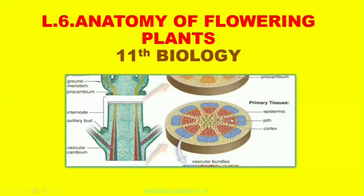Chapter 6: Anatomy of Flowering Plants. Topics to be covered are: 6.1 The Tissues, 6.2 The Tissue System, 6.3 Anatomy of Dicotyledonous and Monocotyledonous Plants, and 6.4 Secondary Growth.